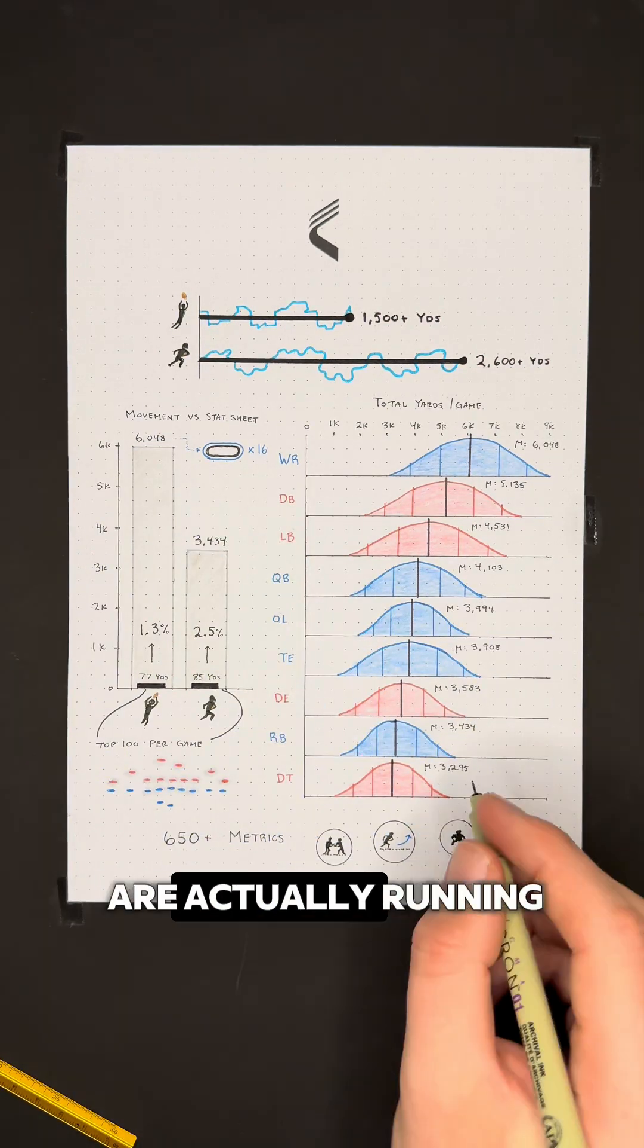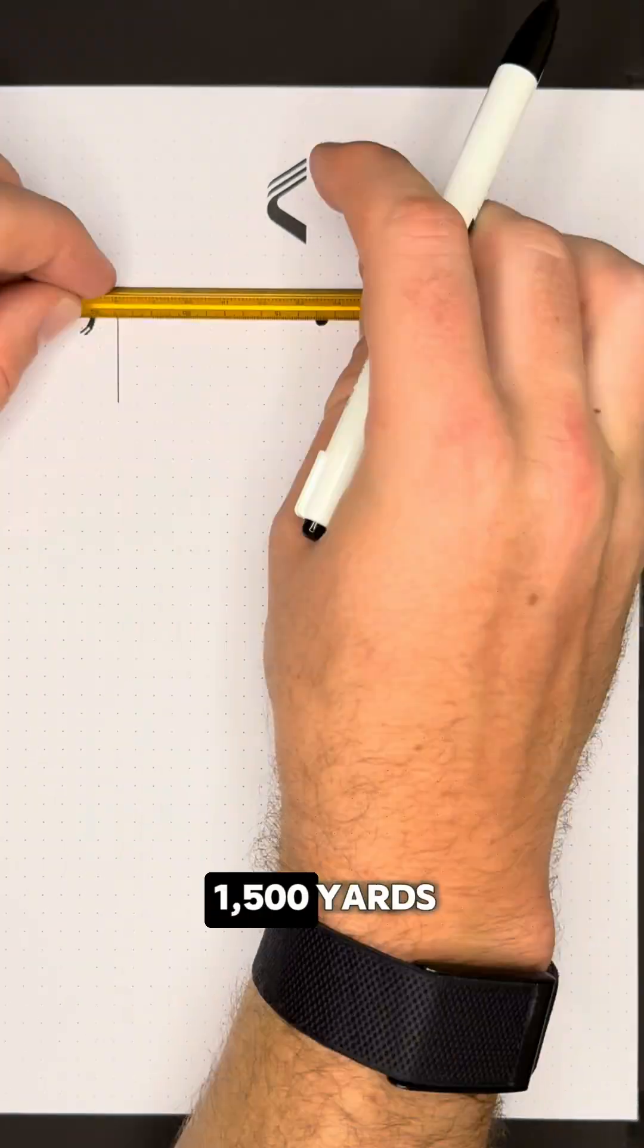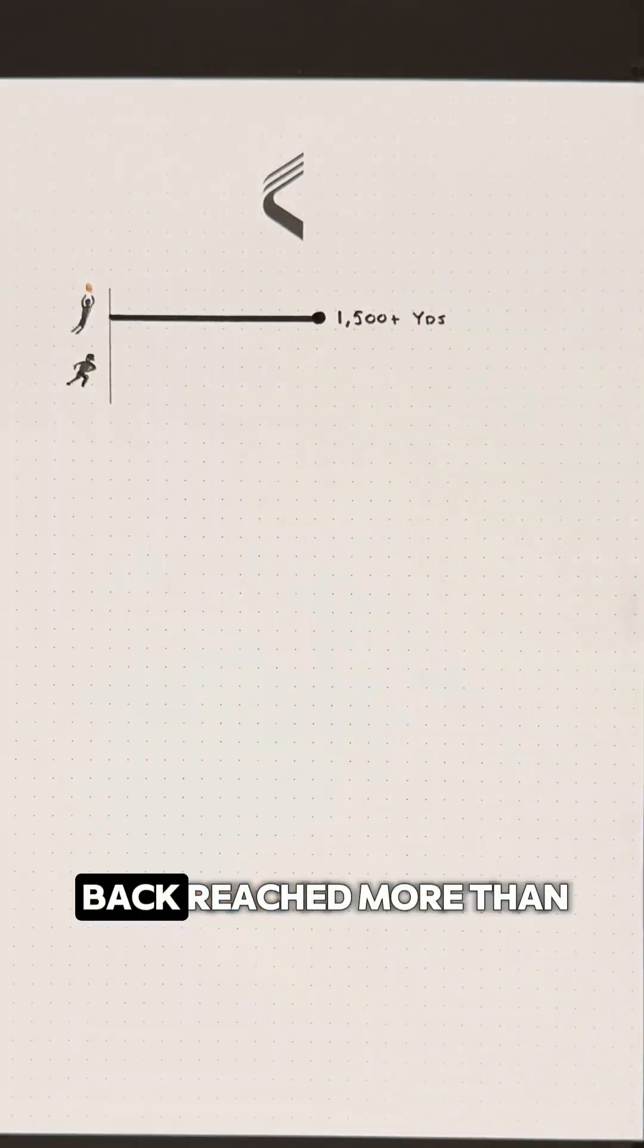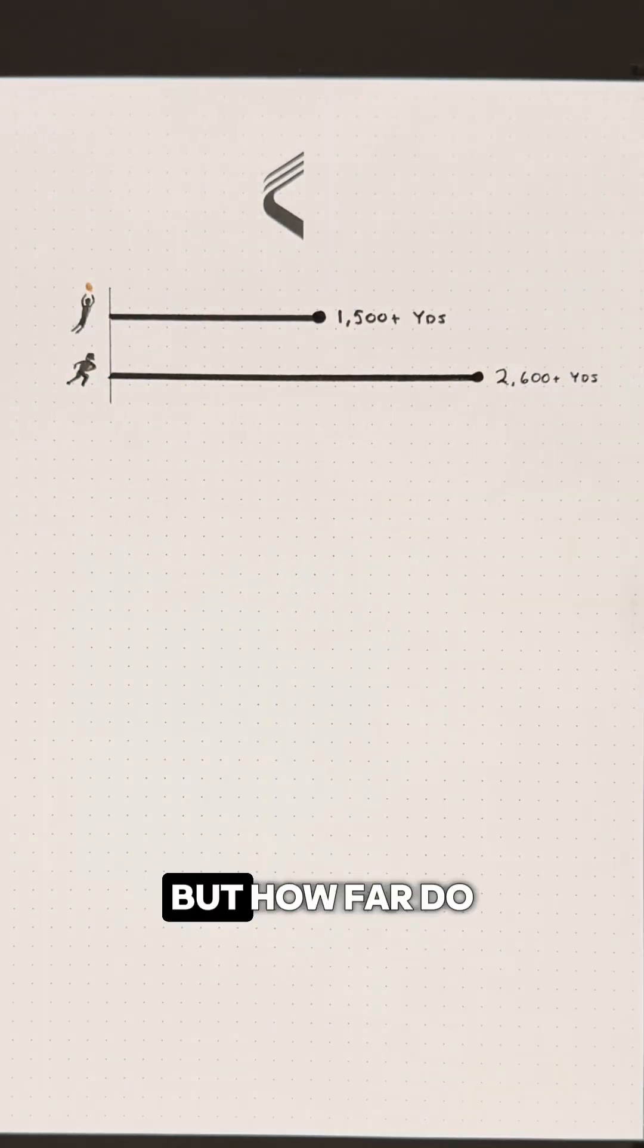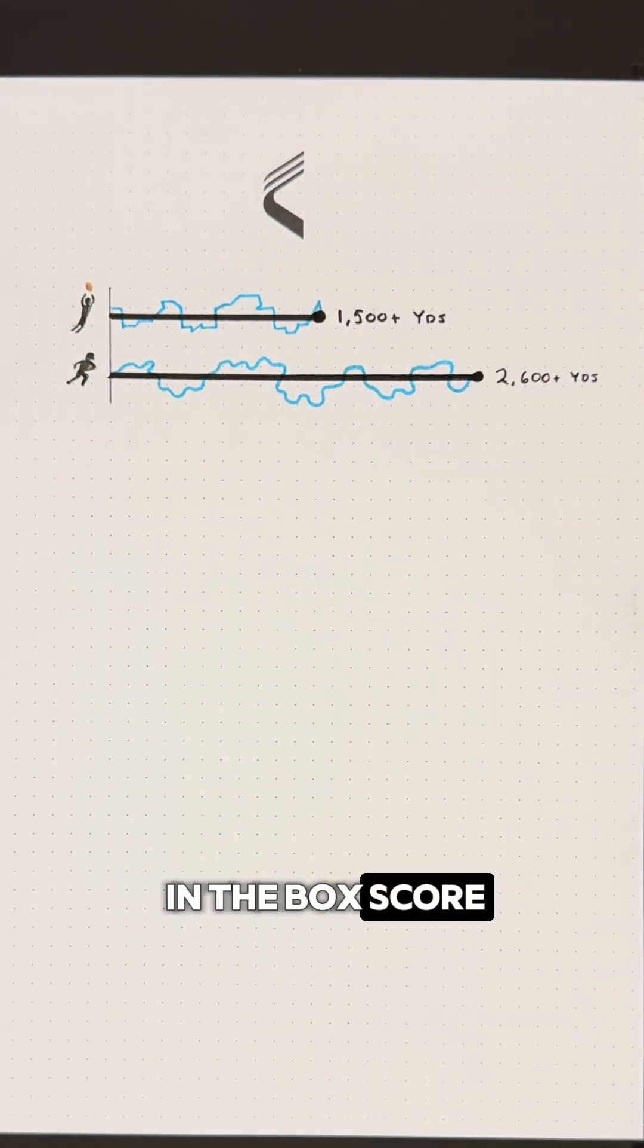Have you ever wondered how much football players are actually running during a game? Take this. The top college receiver this year logged over 1,500 yards and the top running back reached more than 2,600 yards. But how far do these players actually travel in a game to achieve those numbers in the box score?